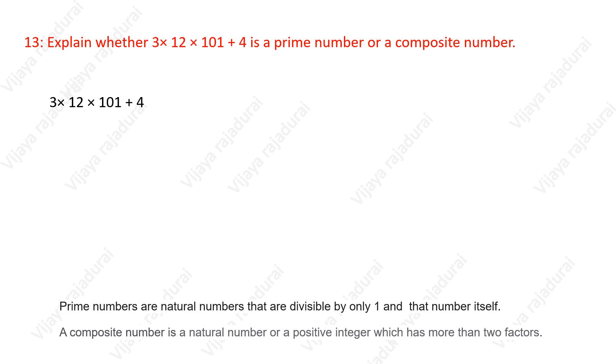Now we consider the question: 3×12×101+4. We take 4 as a common factor from this expression. So we get 4(3×3×101+1).